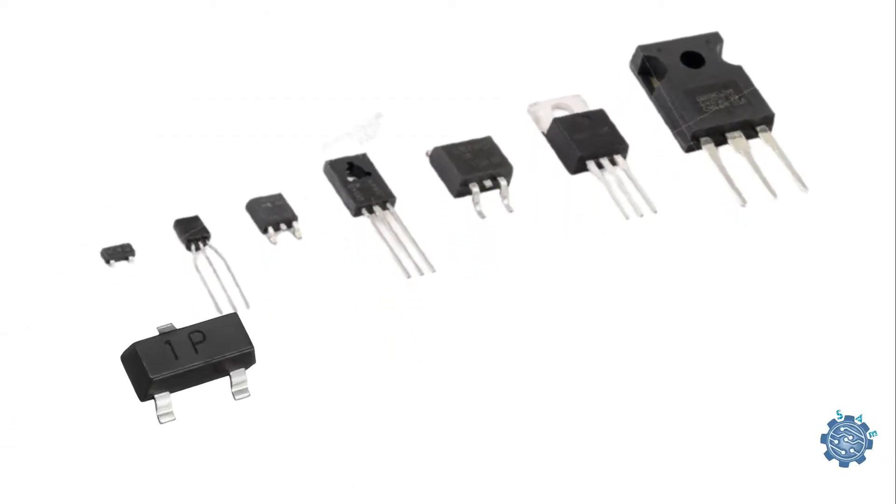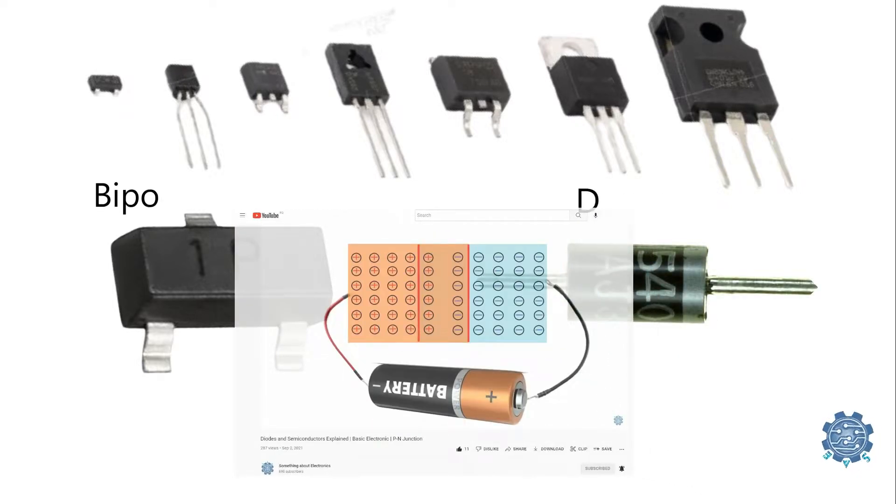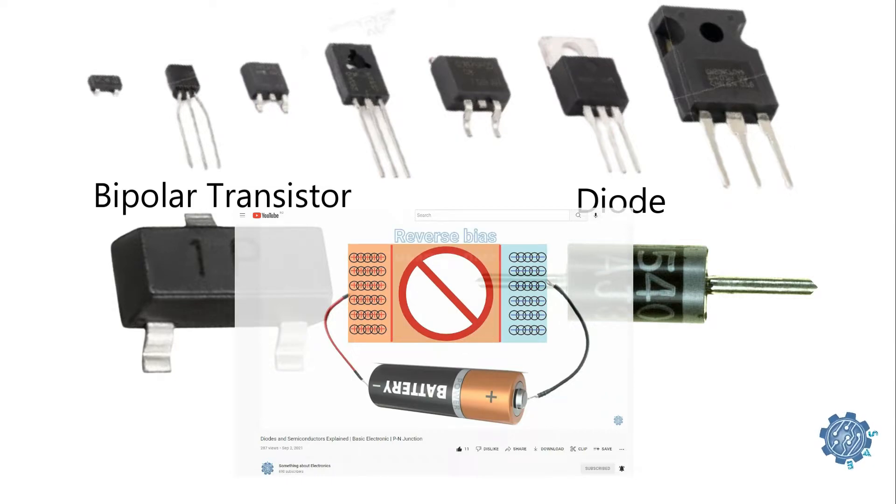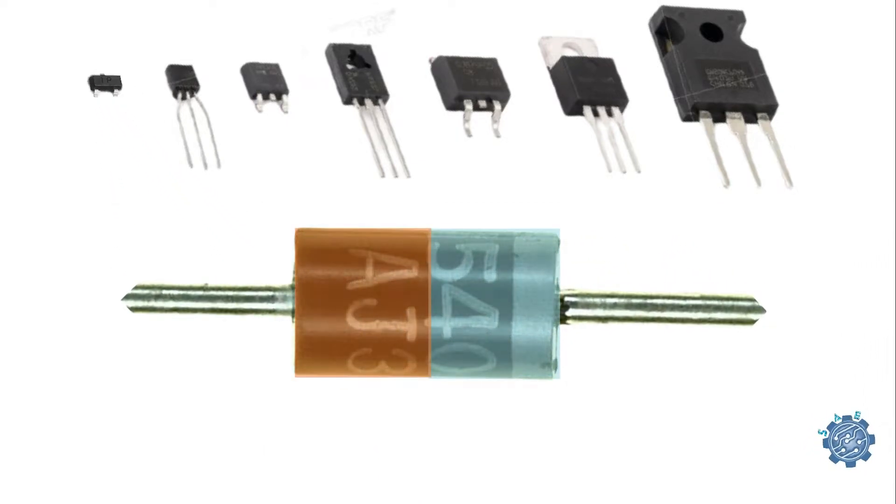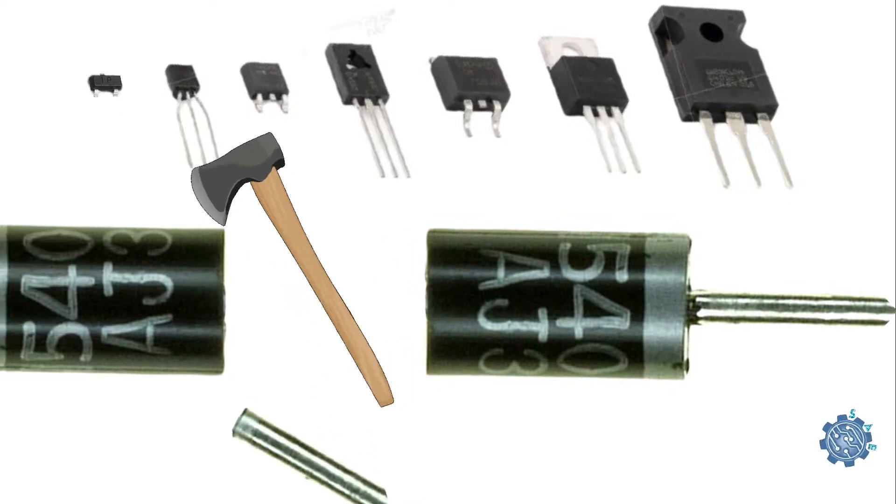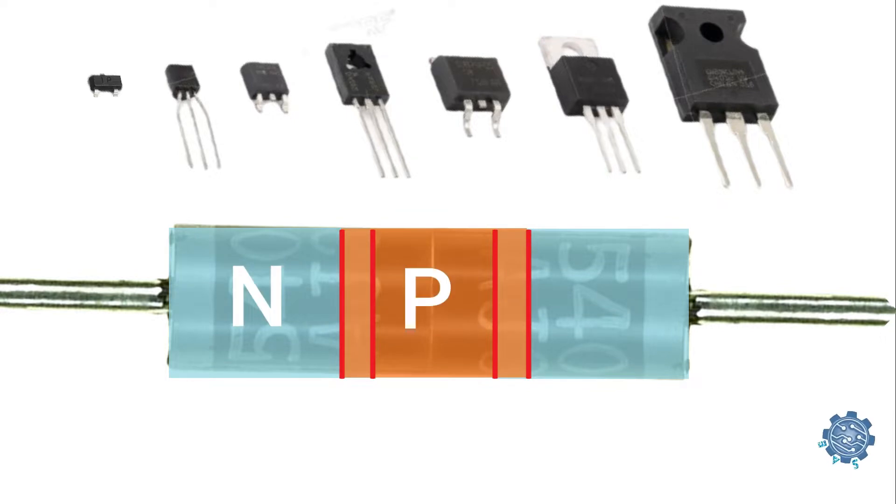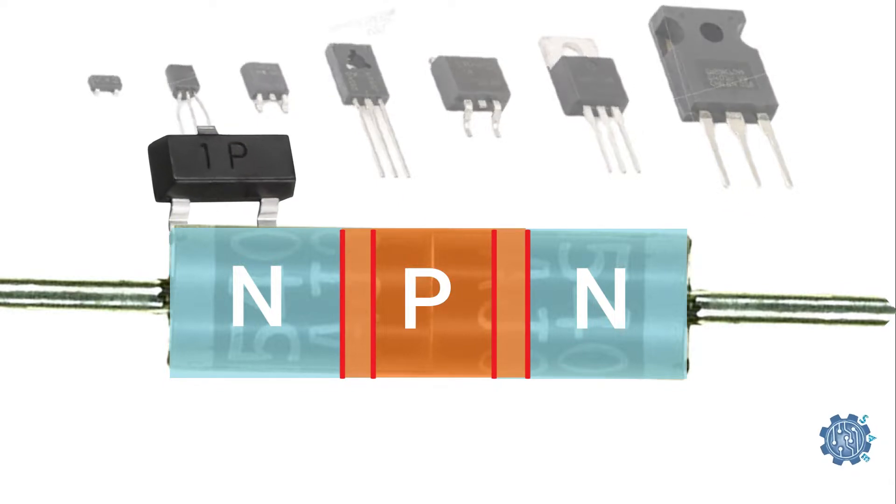Bipolar transistors are constructed similarly to a diode, just a little more complex. We know that a diode is made up from two pieces of semiconductor material that forms a simple PN junction. Let's imagine that we put two diodes back-to-back. This will give us two PN junctions connected together in series that shares a P or N terminal. The fusion of these two diodes produces a device that forms the basis of a bipolar transistor or BJT.